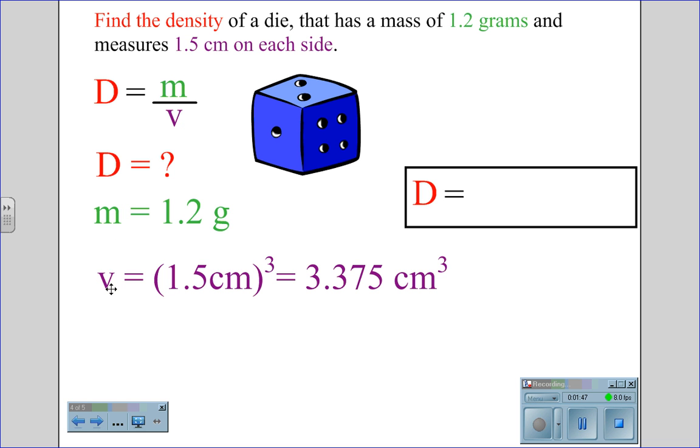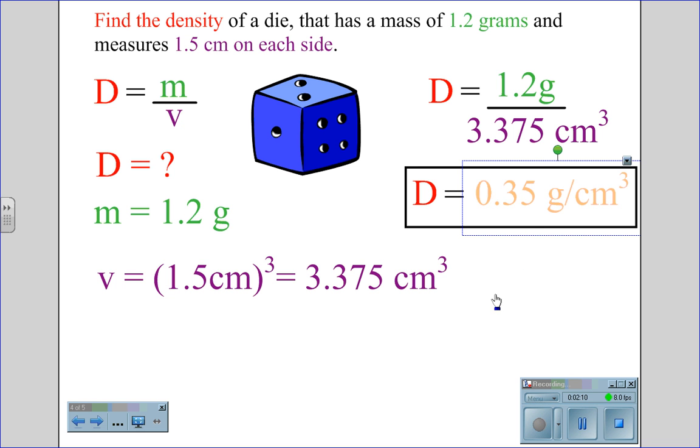And the volume is 1.5 cubed, because we are dealing with a dice, which is a cubic shape. So 1.5 times 1.5 times 1.5 gives us 3.375 centimeters cubed. Plugging into the equation, D equals 1.2 grams divided by 3.375 centimeters cubed gives us a density value of 0.35 grams per centimeters cubed.